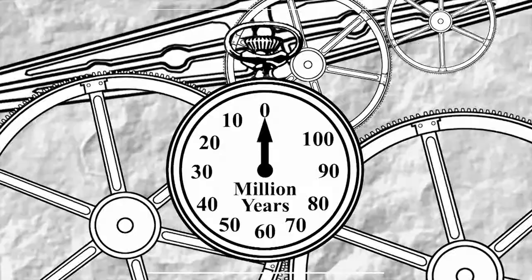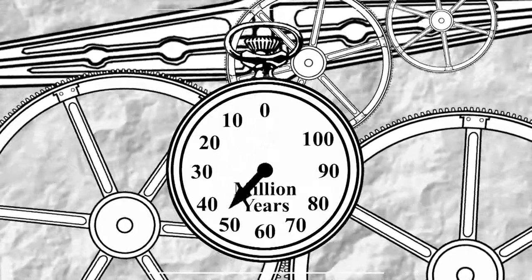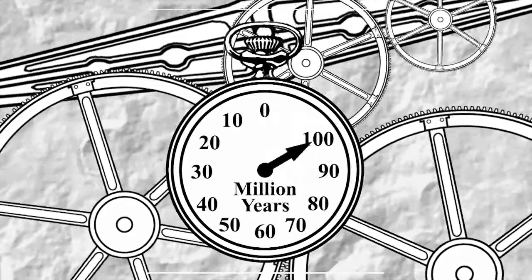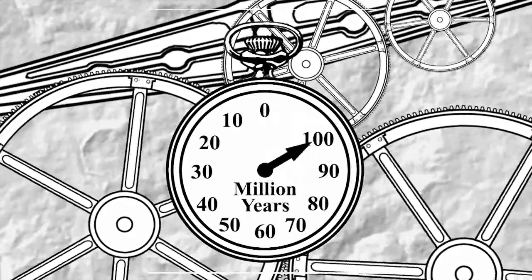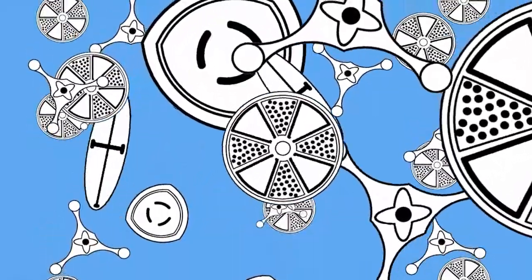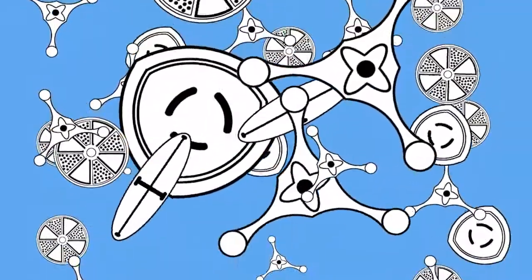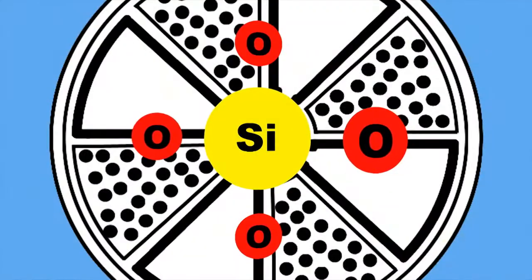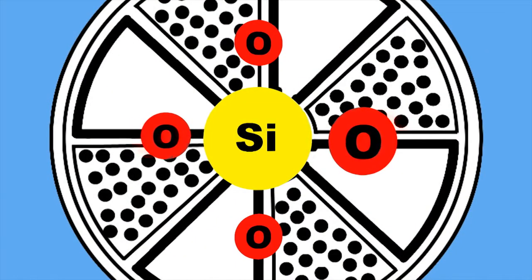Flint always forms in a soft layer of rock called chalk. Flint was formed in the chalky layers at Hengistbury Head around 70 to 100 million years ago, during the Cretaceous Period. Chalk is made entirely of microscopic marine creatures, many of which contain silica, which is a vital part of flint formation.